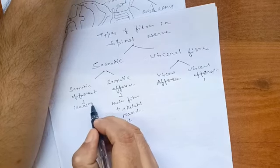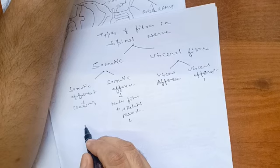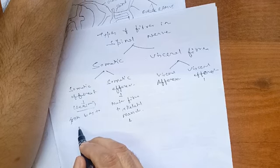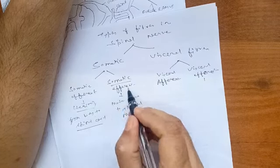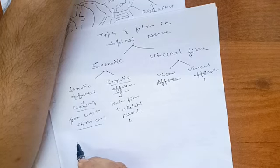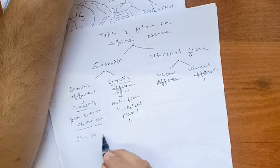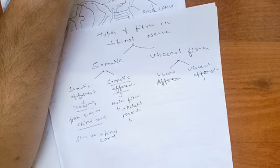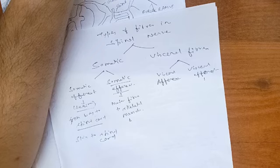The somatic afferent is the sensory fiber. It transmits sensation from the body to the spinal cord. Sensations of pain, touch, and temperature are carried from the skin to the spinal cord. Sensations of joint position and tension in the muscles are carried to the spinal cord from the joints, tendons, and muscles — that is the somatic afferent fiber.